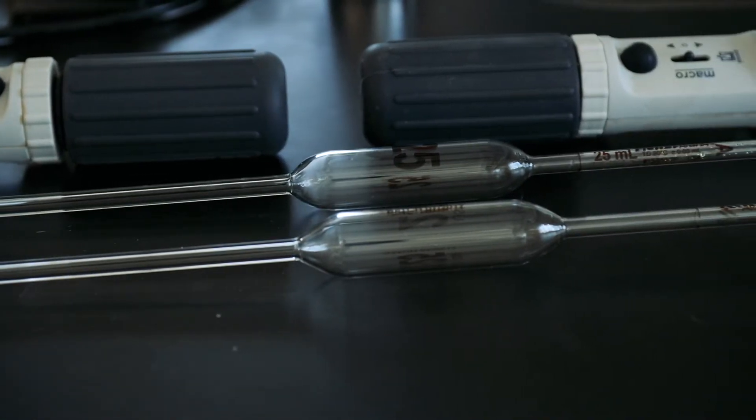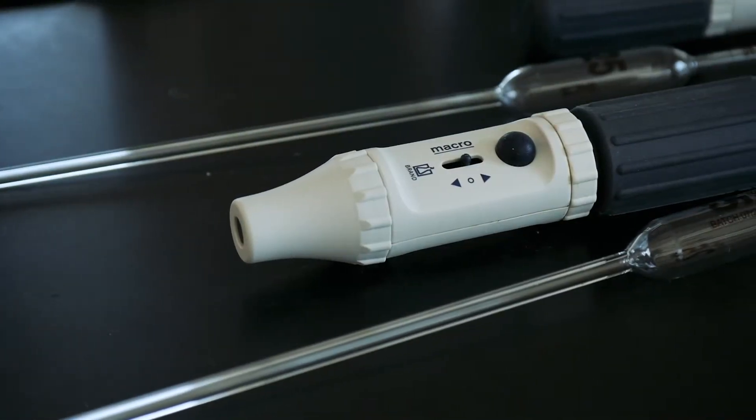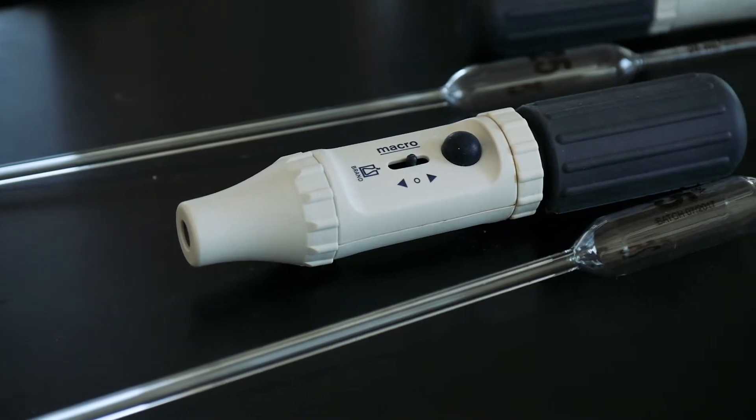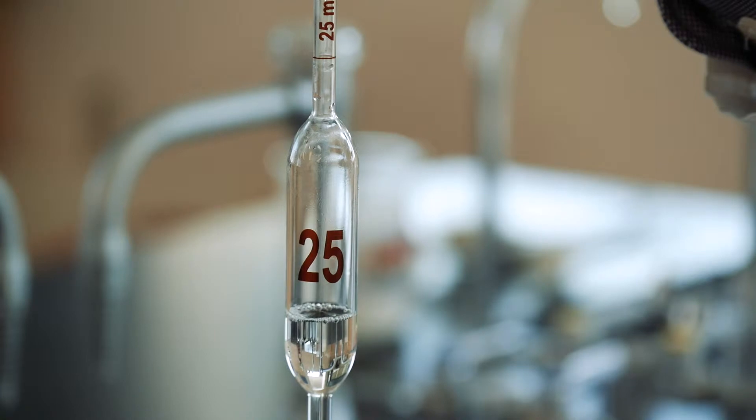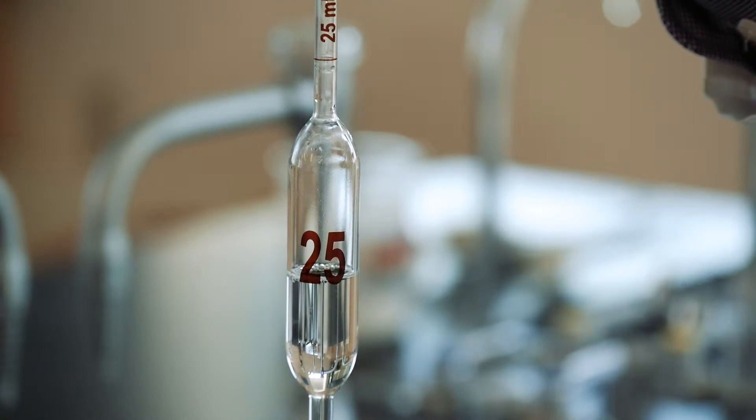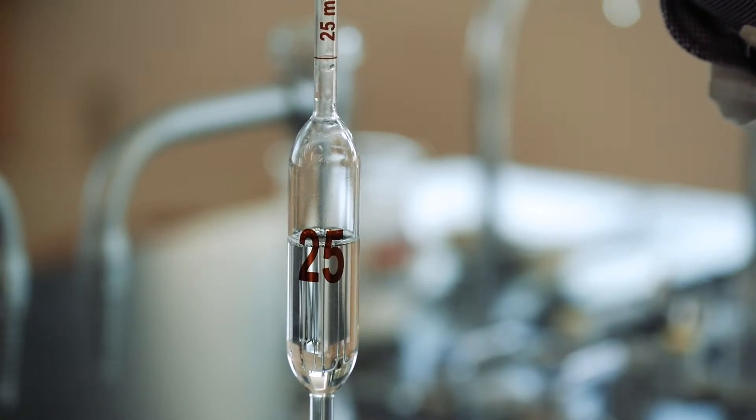A volumetric pipette, or bulb pipette, allows for extremely accurate measurements of volume of solution. These pipettes are calibrated to precisely deliver a fixed volume of liquid. You always want to clean and rinse the pipette before starting your experiment.